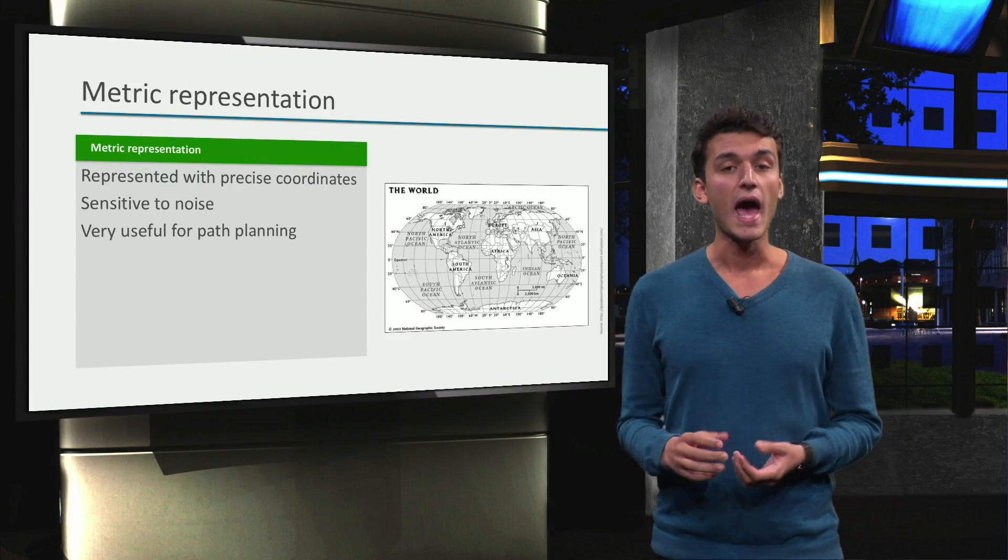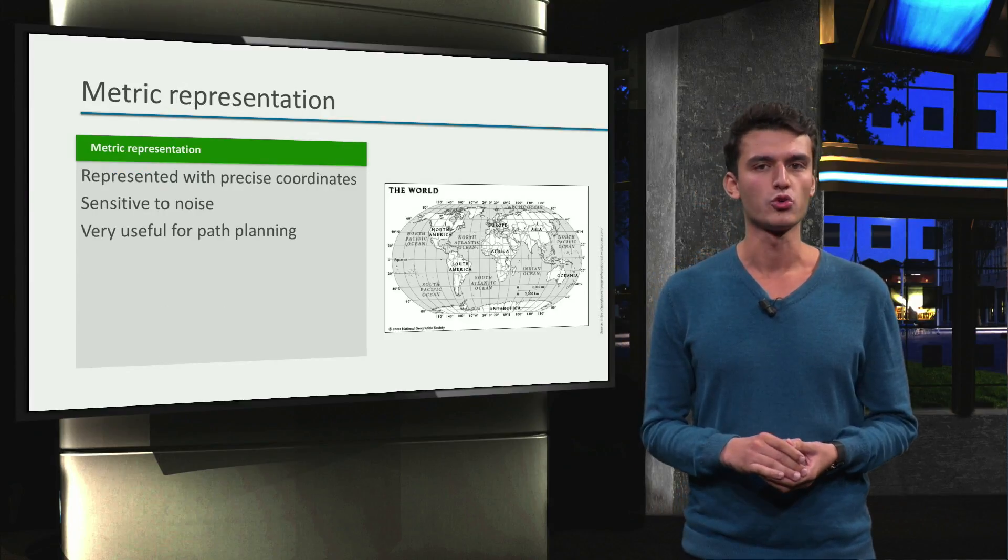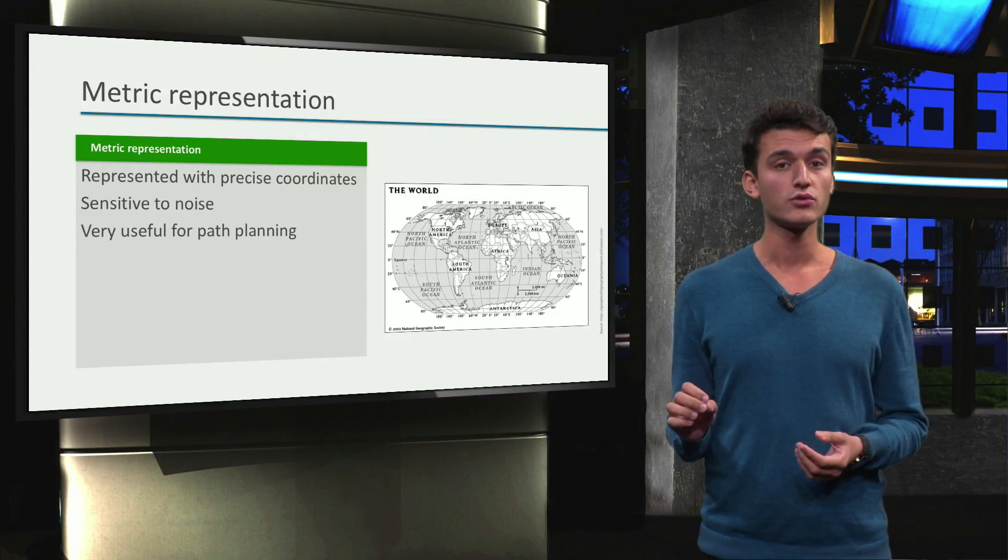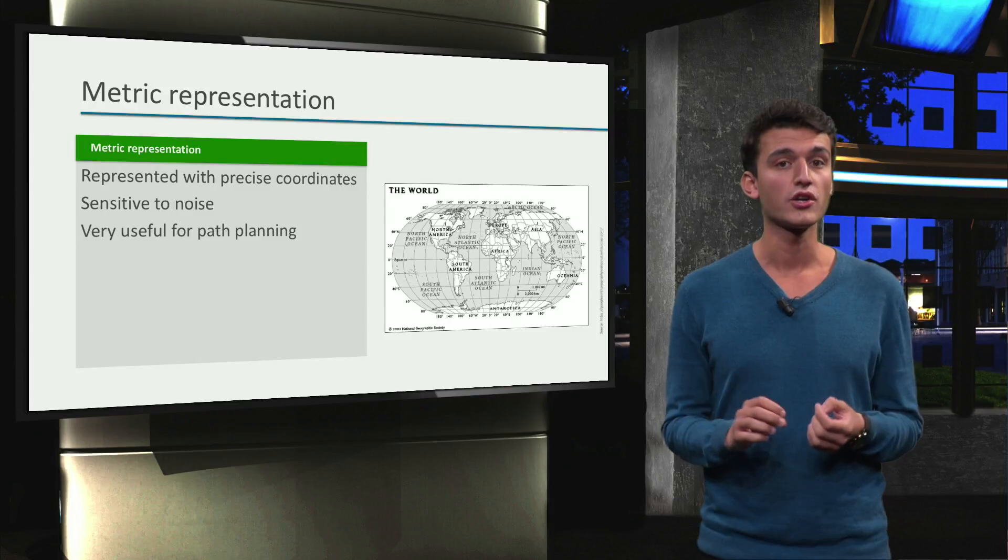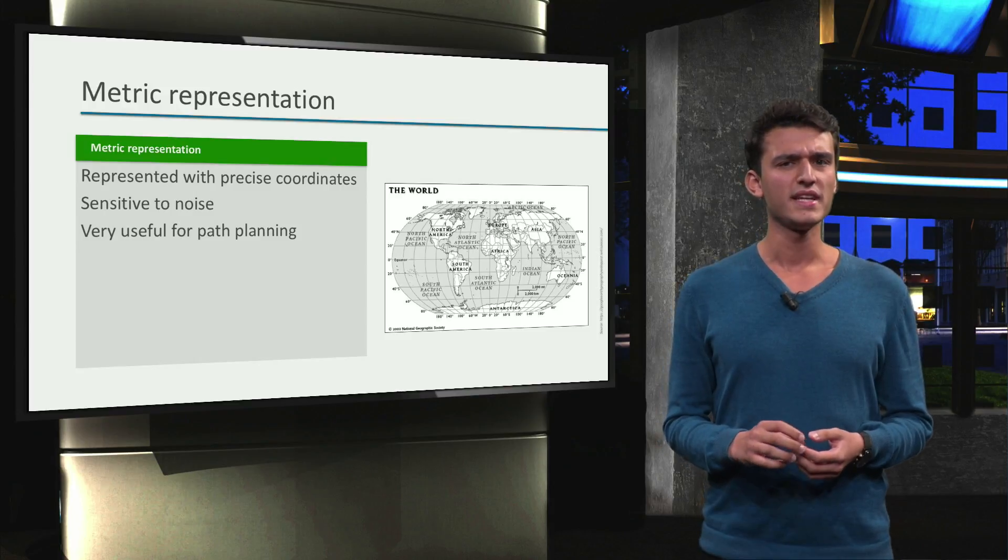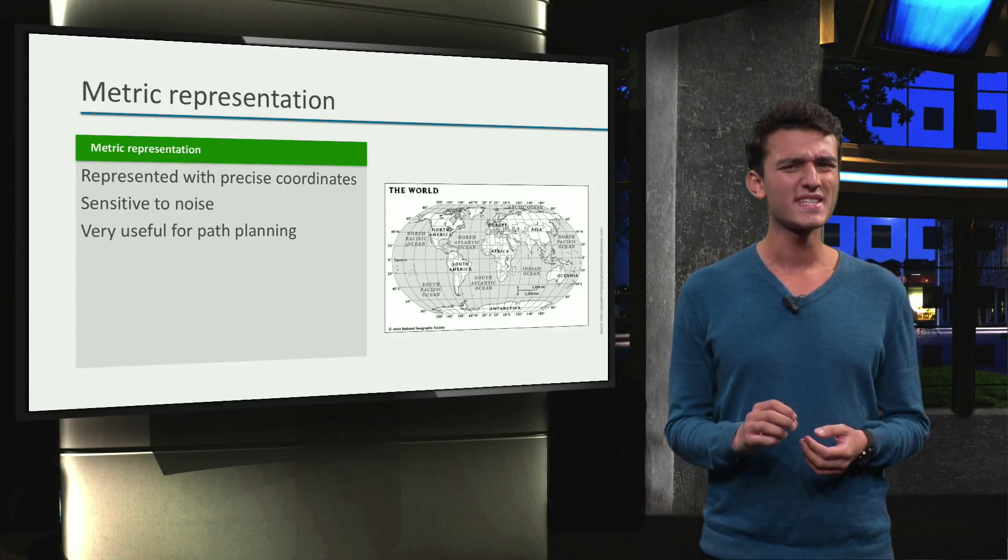In such a case, a metric representation will be more useful. This representation uses precise coordinates. For example, longitude and latitude coordinates are used to determine every place on earth. Because this method needs to be so precise, it's pretty sensitive to noise.